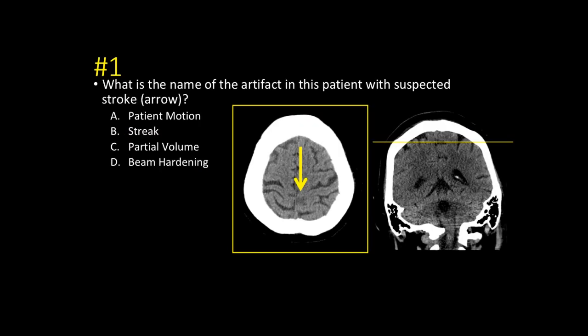Number one: what is the name of the artifact in this patient with suspected stroke depicted by the arrow? The axial image in the yellow box corresponds with the slice in the coronal image. This is bread-and-butter partial volume artifact. You can see that the slice goes through the sulcus and the gyrus on the CAT scan — the axial image gets a mixture of the two.